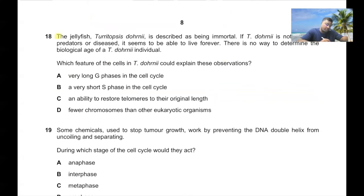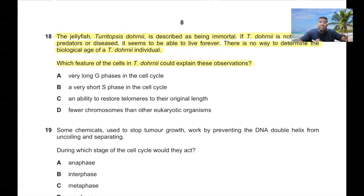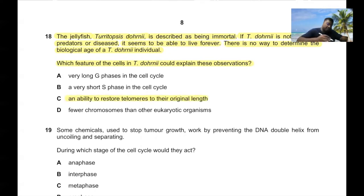Question 18: The jellyfish Turritopsis is described as immortal. There is no way to determine its biological age. Organisms that do not tend to age have the ability to regenerate their telomeres. Telomeres shorten every time somatic cells divide, so the answer is the ability to restore telomeres to their original length. 18C.